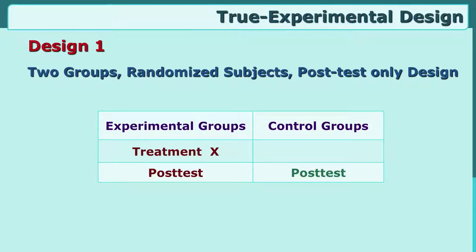Let us see true experimental design one. There are two groups with randomized subjects and there is only a post-test. One group is the experimental group, the other is the control group, and we are only giving a post-test to both. Treatment is given to the experimental group but not the control group. This design is called true experimental because of that word 'randomized subjects.' For randomization, we must understand that random does not mean haphazard — random is a very systematic arrangement of selecting a sample.